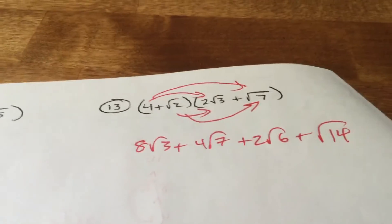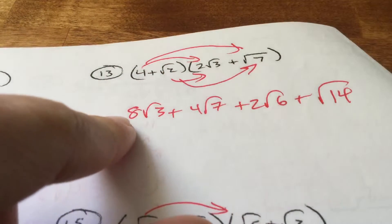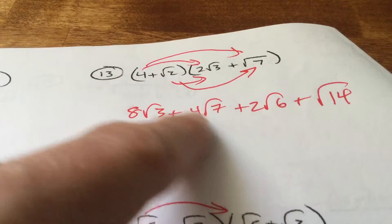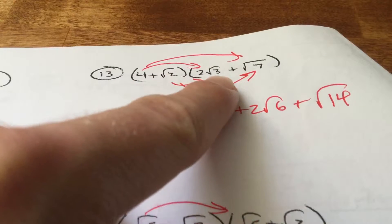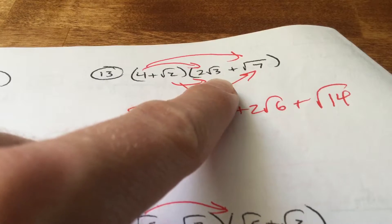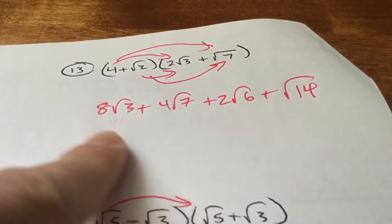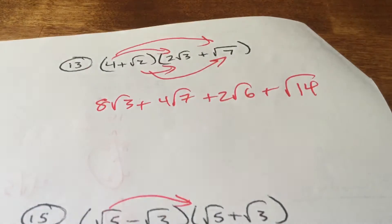I'm sure we'll do number 11 in class. First outer inner last — multiplying with roots. 4 times 2 is 8; attach root 3. 4 times root 7 is just 4 root 7. Root 2 times 2 root 3: that 2 stays on the outside, and root 2 times root 3 — same root — gives root 6. Root 2 times root 7 is root 14. You don't have the same square root: square root of 3, square root of 6, square root of 7, square root of 14 — all different roots.